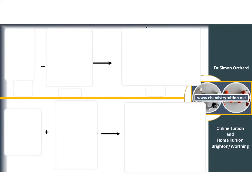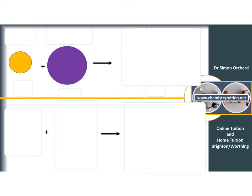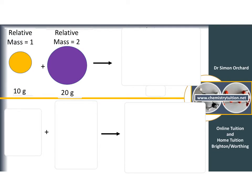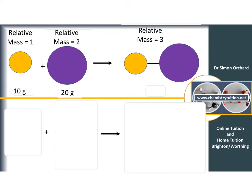Let's put this into practice and think about doing a reaction between an orange atom and a purple atom. The orange atom has a relative mass of 1 and the purple atom has a relative mass of 2. Starting with 20 grams of the purple atom, I need 10 grams of the orange atom to react completely, because the orange atoms have half the mass. That would produce a molecule with a relative mass of 3, and therefore a mass of 30 grams.